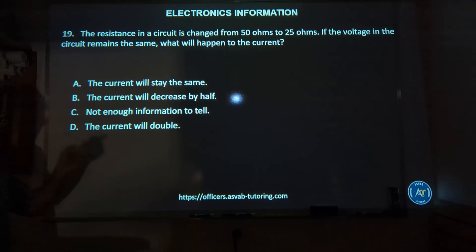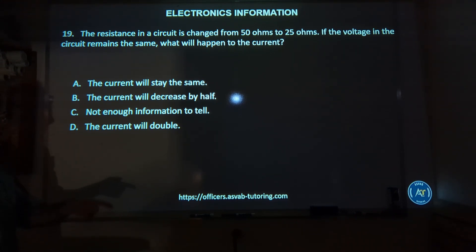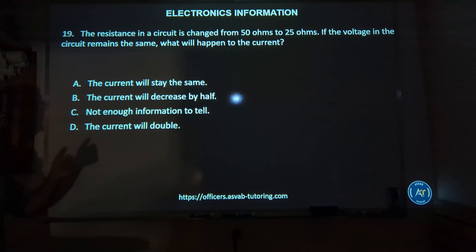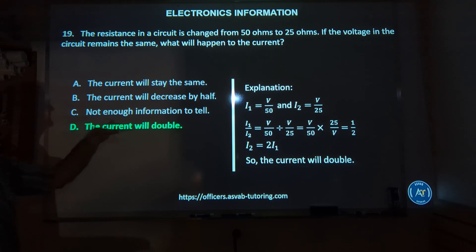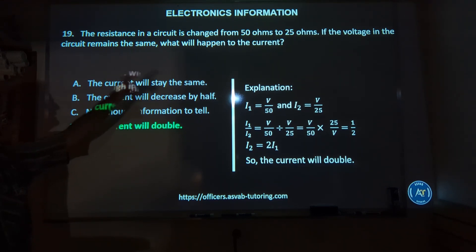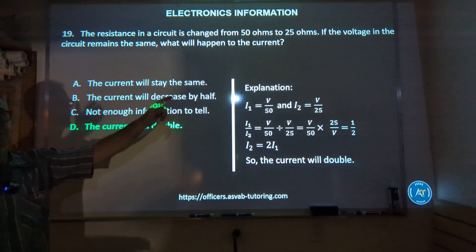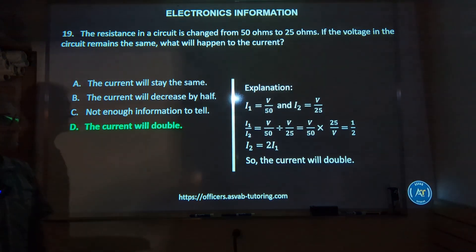Number nineteen: the resistance in a circuit is changed from 50 ohms to 25 ohms, and the voltage remains the same. What happens to the current — current stays the same, the current decreases by half, not enough information to tell, or the current will double? The correct answer is D, the current will double. If you cut the resistance in half, the other side of the equation is the opposite — it has to double.